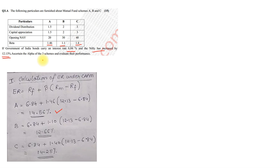Second, same way for B, again, it would be 6.84 plus 1.10 into 12.13 minus 6.84, which came to 12.66%. Similarly, for third, it came as 14.25%. So, first step is always, you need to calculate as per expected return as per CAPM method.